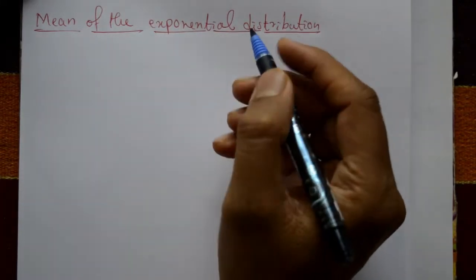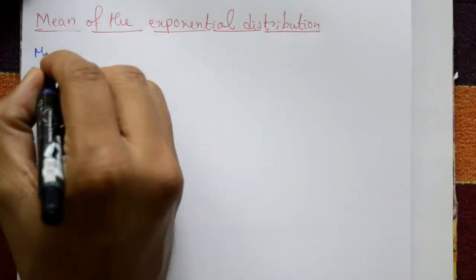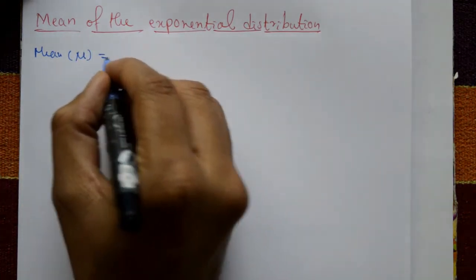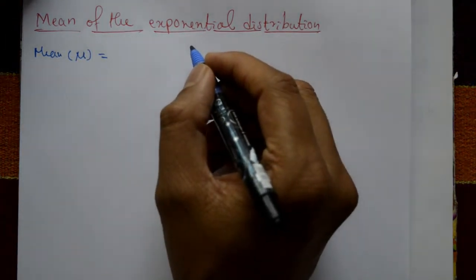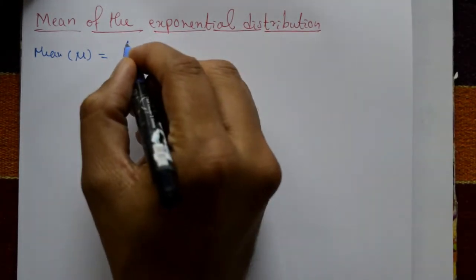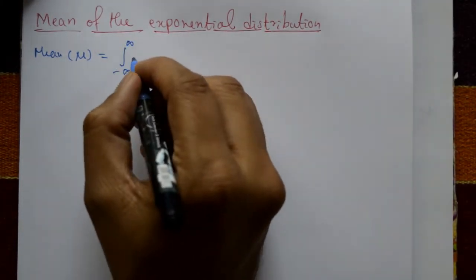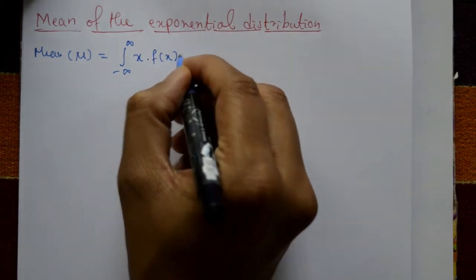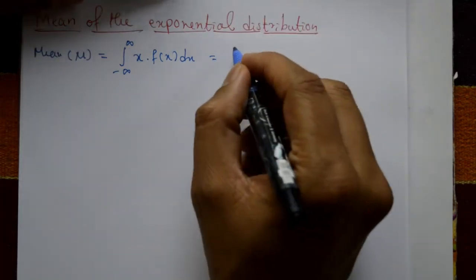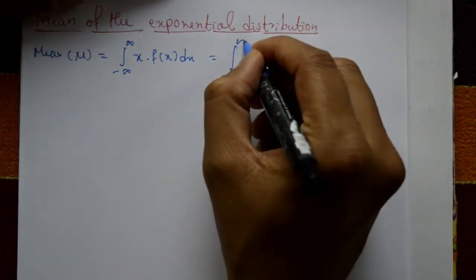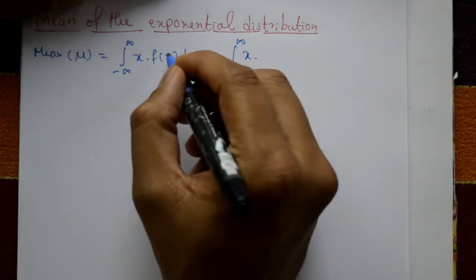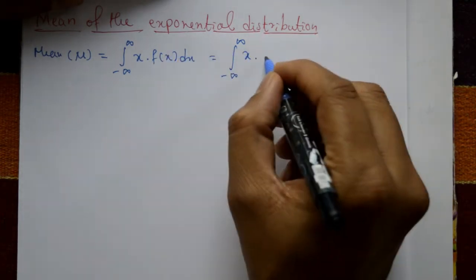The mean of the exponential distribution — mean is denoted by the symbol μ. This is a continuous probability distribution and its mean is given by the integration from minus infinity to plus infinity of x into f(x) dx.